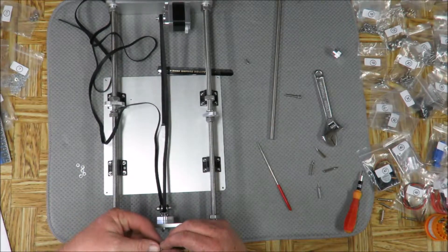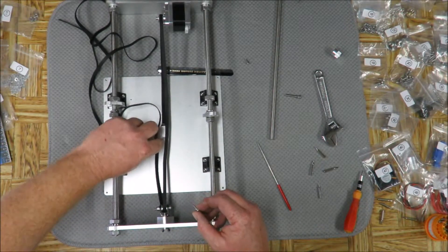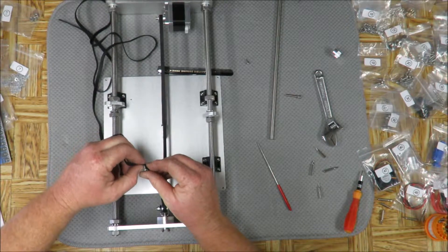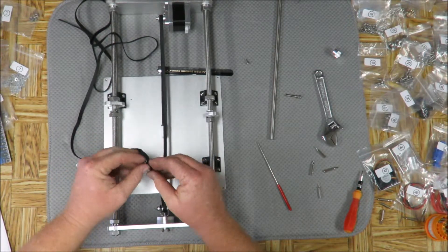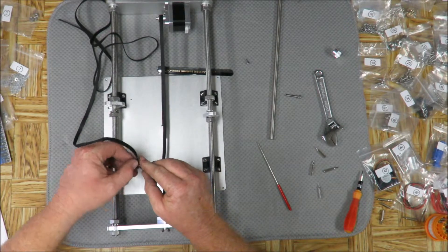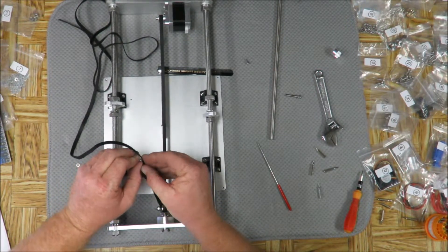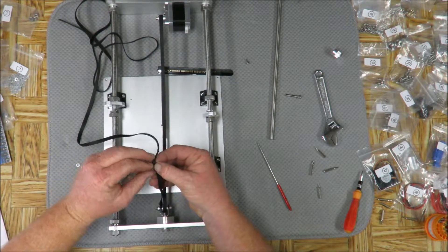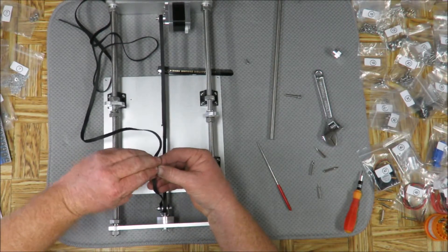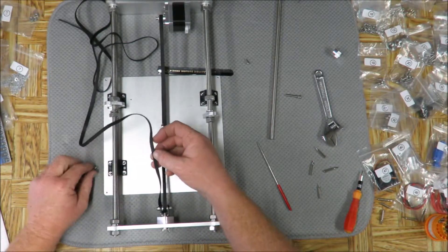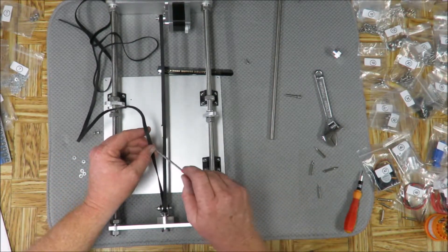Okay, so now we're going to take another number 19 screw and we're going to put a washer on it. And that is not going to go through yet. So let's go ahead and make the hole a little bit bigger.